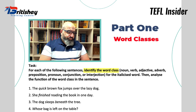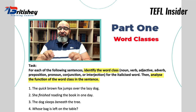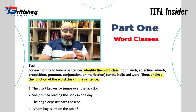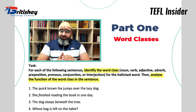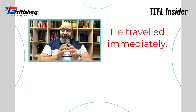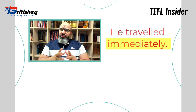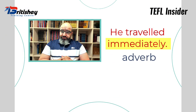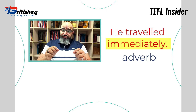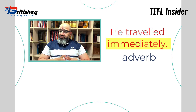And then, for the italicized word, analyze the function of the word class in the sentence. So it's about identifying the word class and analyzing the function of that word class in the sentence. For example, when we say 'he traveled immediately' and we want to work with the word 'immediately', we would say that this is an adverb. Now what is the function of 'immediately' in 'he traveled immediately'? We would say it's an adverb that modifies the verb 'travel' in the sentence.